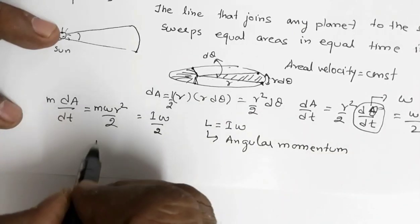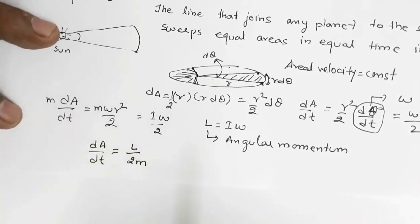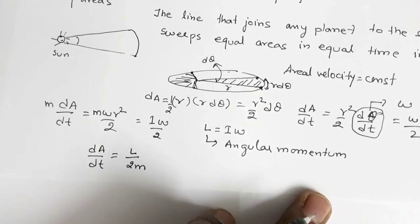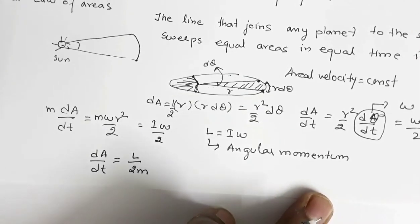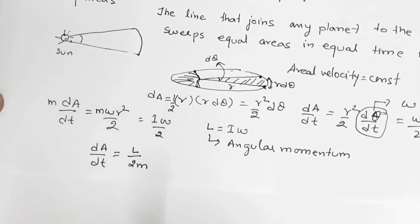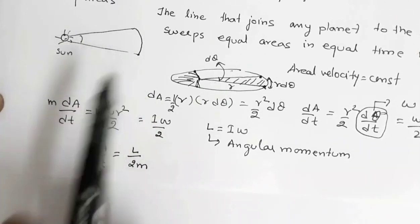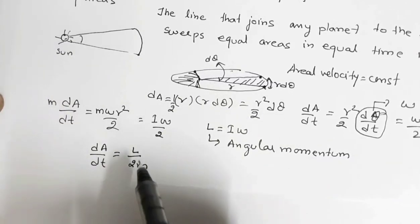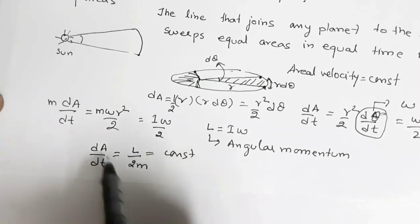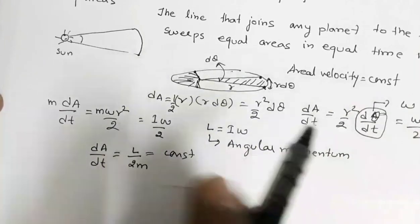So dA/dt = L/(2m). From the chapter on rotational motion, we know that if external torque is zero, the angular momentum remains constant. This planet is revolving around the sun due to gravitational force of attraction, and there is no external torque. So L is constant, and mass of the planet is already constant. This implies the entire term L/(2m) is constant, which gives dA/dt is constant — so areal velocity is constant. This is the law of areas.